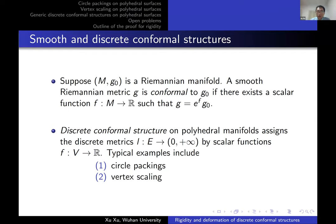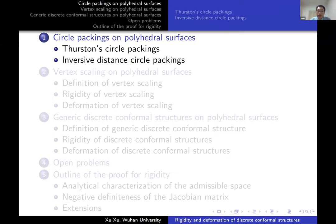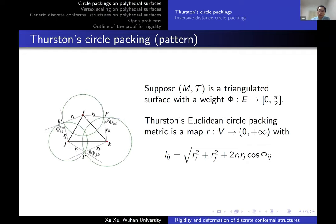The typical examples include circle packings and vertex scalings. The tangential circle packing is a special case of the Thurston circle packing. Given a triangulated surface with a weight phi defined on edges with values in [0, π/2], we assign every vertex i with a circle of radius r_i, requiring adjacent circles to intersect with angle φ_ij. The length L_ij is then determined by the cosine law.